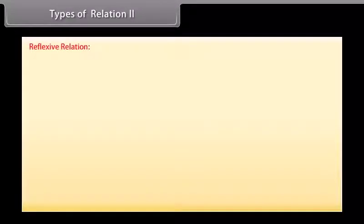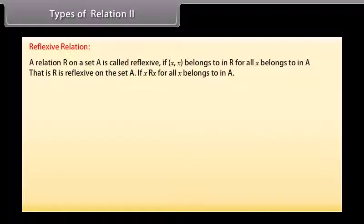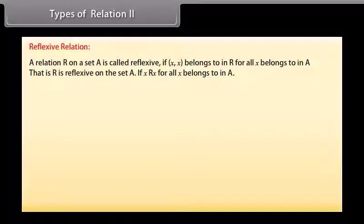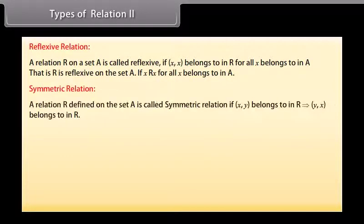That is, R is equal to A cross A. Reflexive relation: a relation R on a set A is called reflexive if (x, x) belongs to R for all x belonging to A. That is, R is reflexive on the set A if x is related to x under the relation R for all x belonging to A. Symmetric relation: a relation R defined on the set A is called symmetric relation if (x, y) belongs to R implies that (y, x) belongs to R.